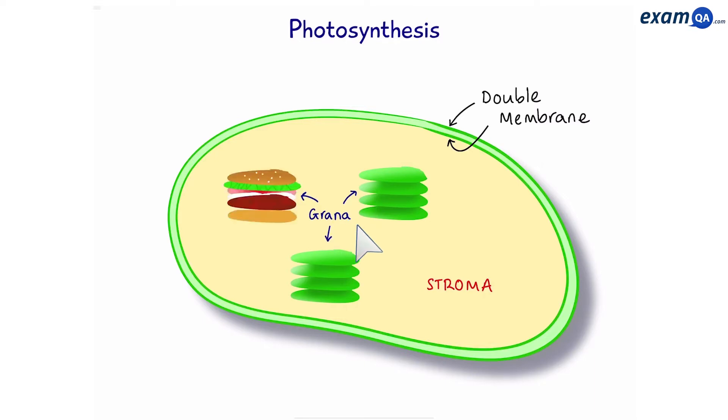They kind of look like cheeseburgers. But anyway, between the grana we have a stretched thylakoid called a lamella. And we also have a grain of starch in the chloroplast.